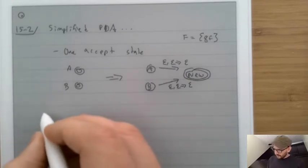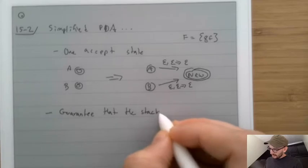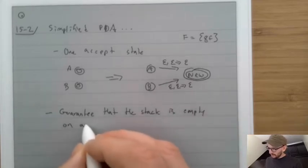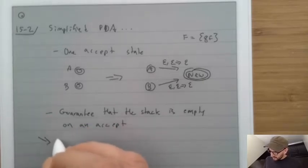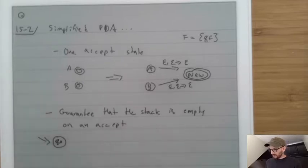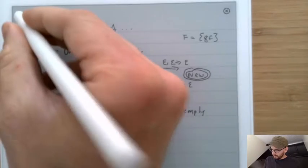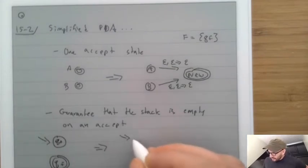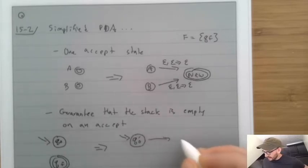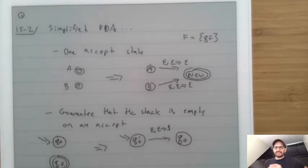The next thing we'll do is guarantee that the stack is empty on an accept. The way we'll do that is we'll make it so that our start state Q0 and our unique end state QF are transformed so that we have a new start state Q0-prime, and it transitions to Q0 doing epsilon, epsilon → dollar-sign. Dollar-sign is some symbol not otherwise used.